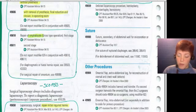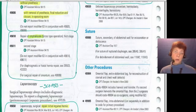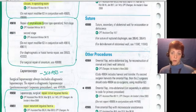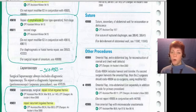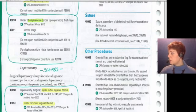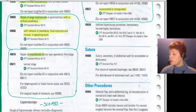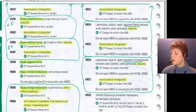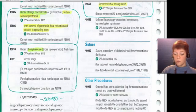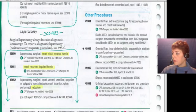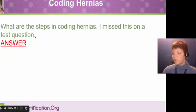They also go into scope-type repairs, which could be added as another top variable: is it a scope repair versus open? Since I started teaching this, there was only one scope code and now we've got four bubbles. The ability to do scope repairs for hernias has increased. Hopefully that helps with understanding how to code hernias.